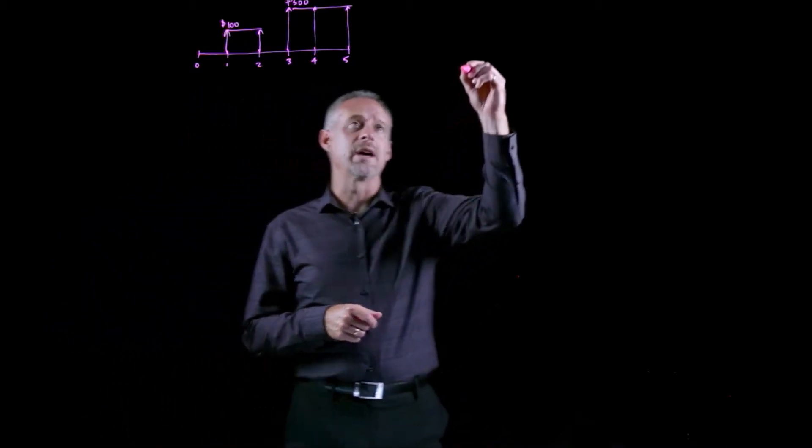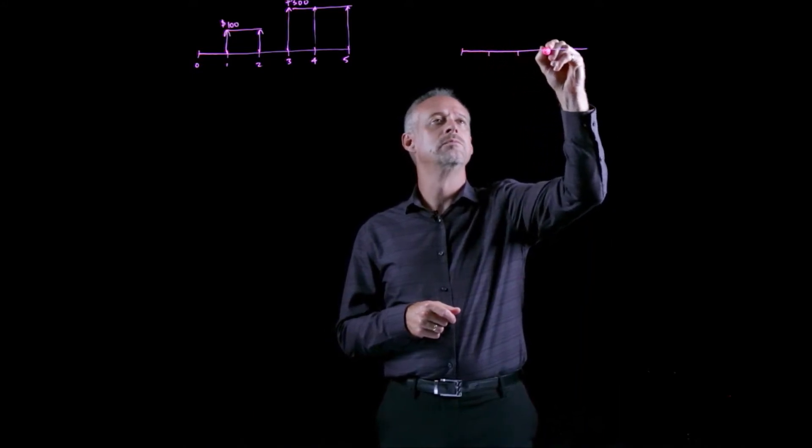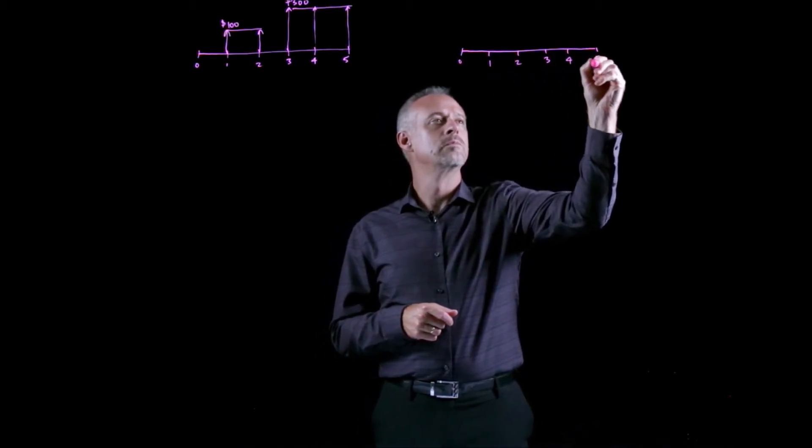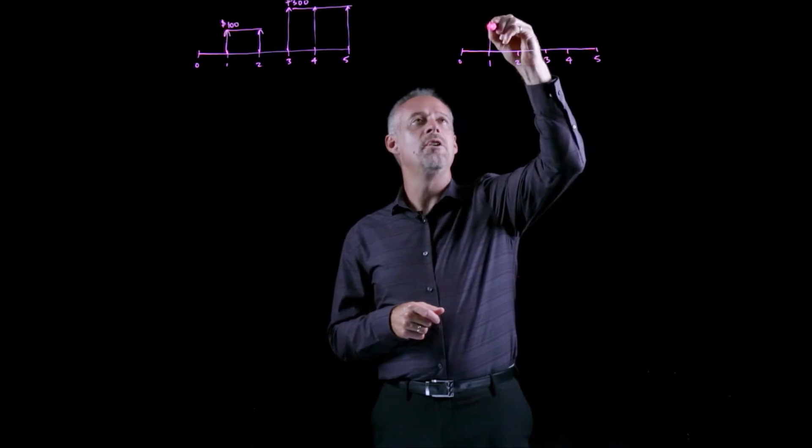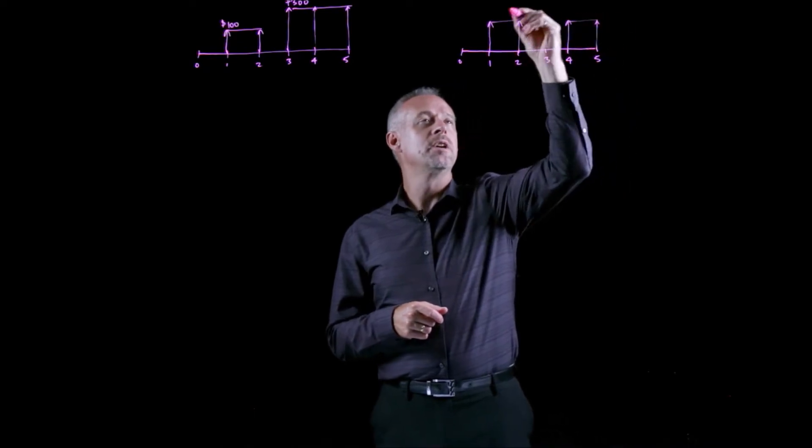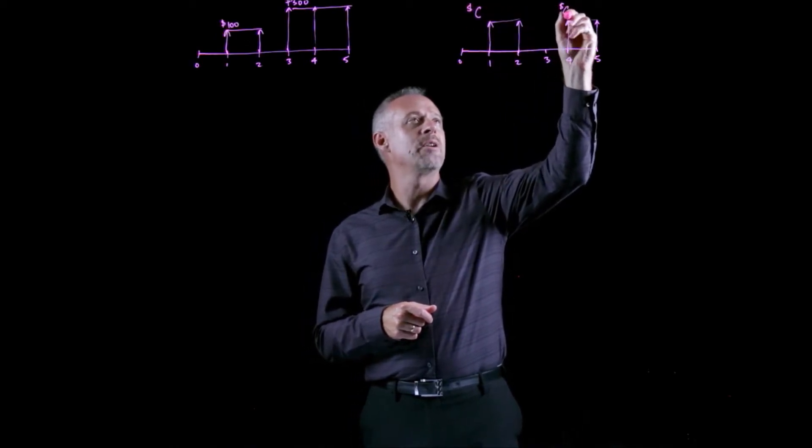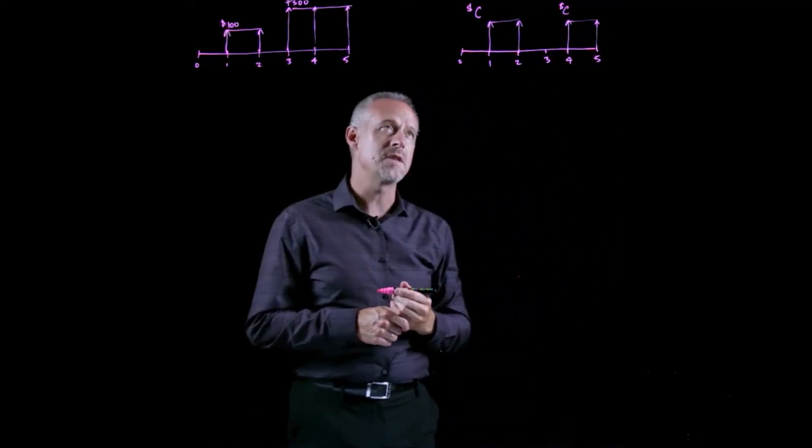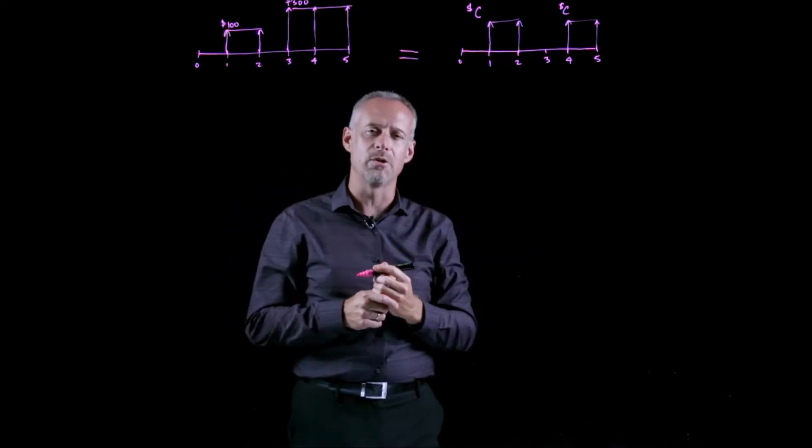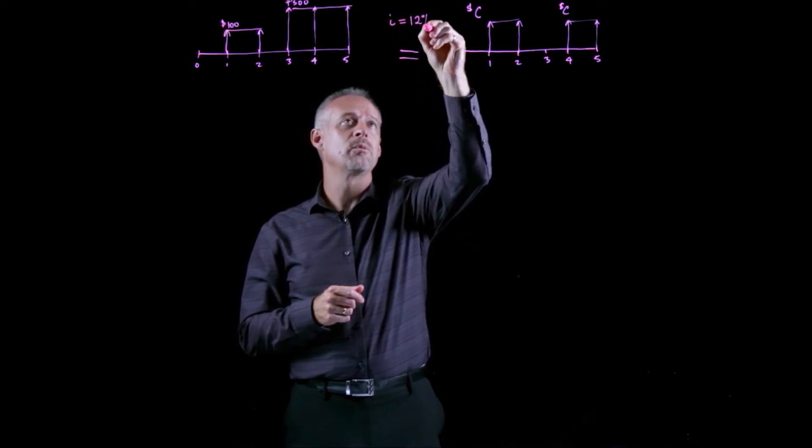And then we're given another cash flow diagram, again, five years. This time, we're given an unknown amount, and we're also given a bit of a challenge in that there's a gap in here. So we're asked, what is the value of these payments, C, that creates equivalence between these two cash flows, assuming an interest rate of 12%.